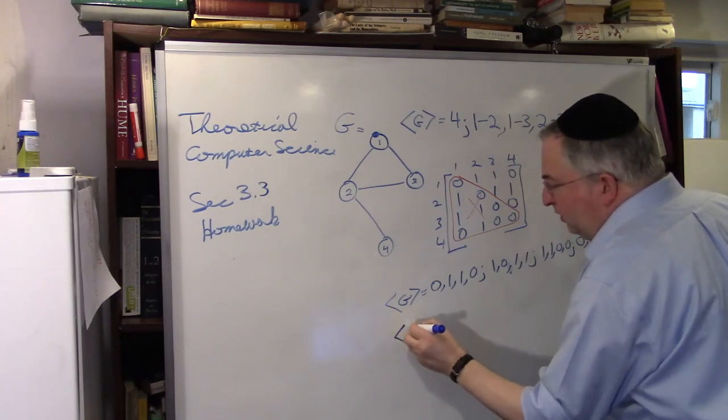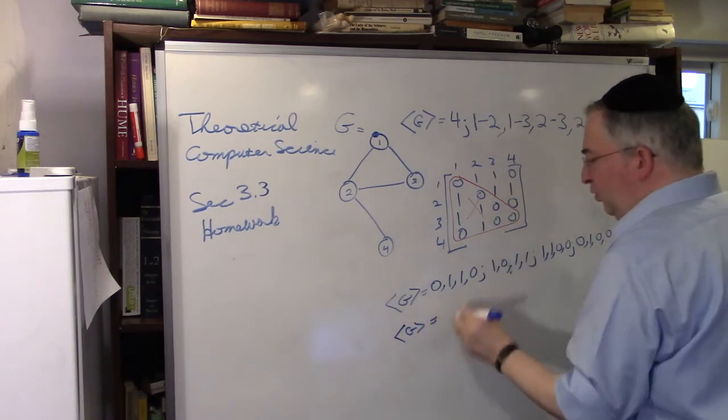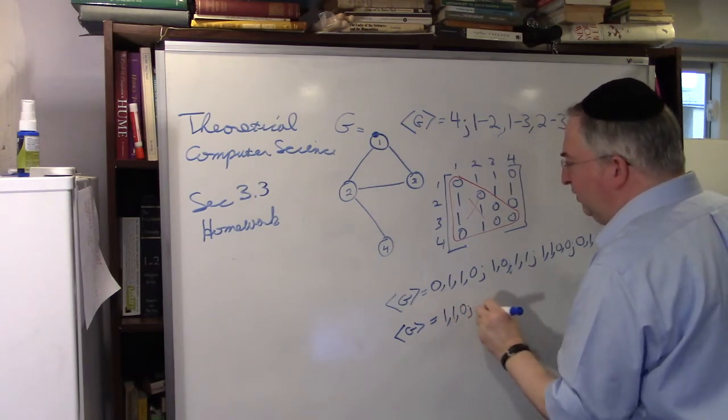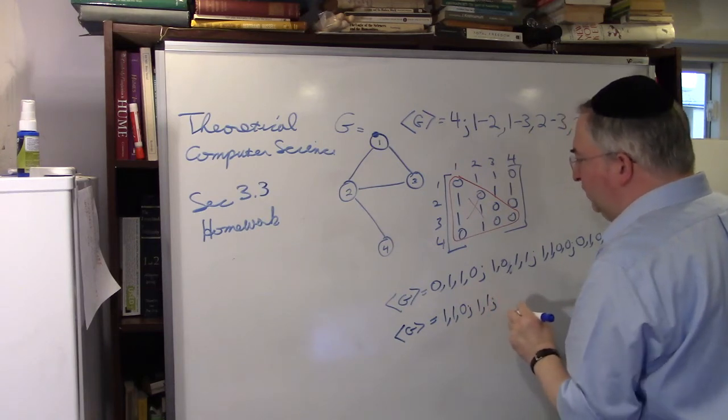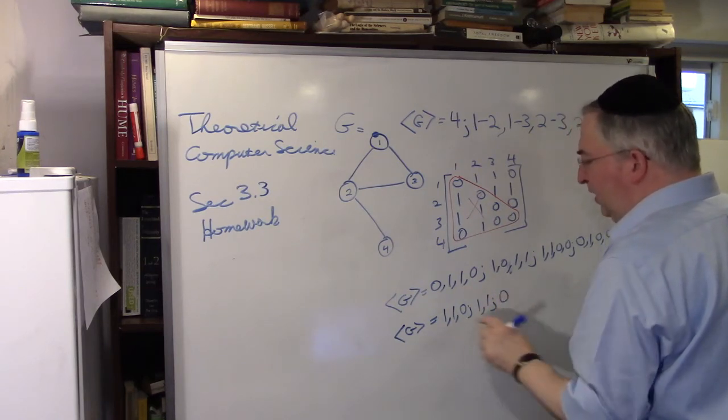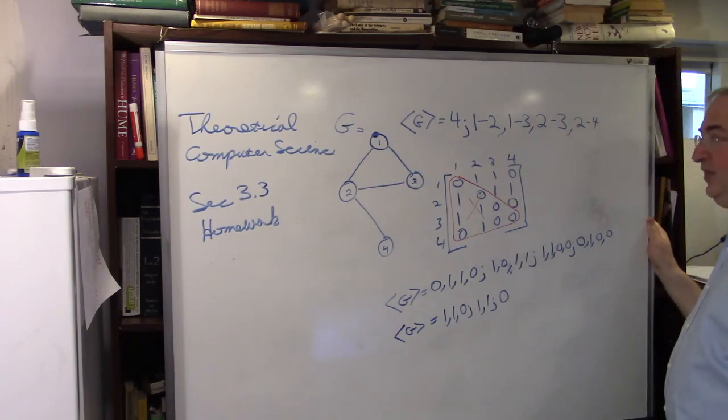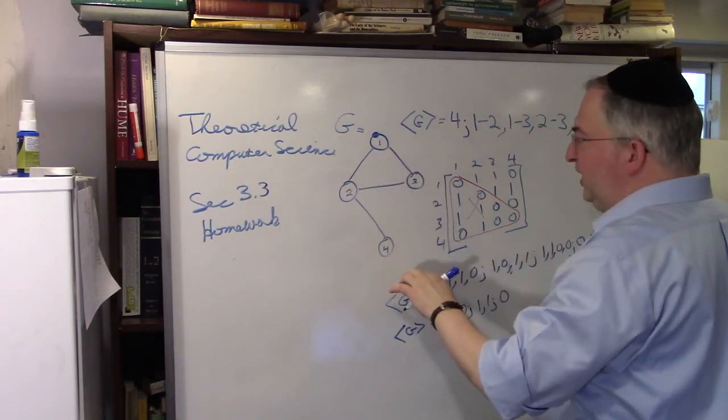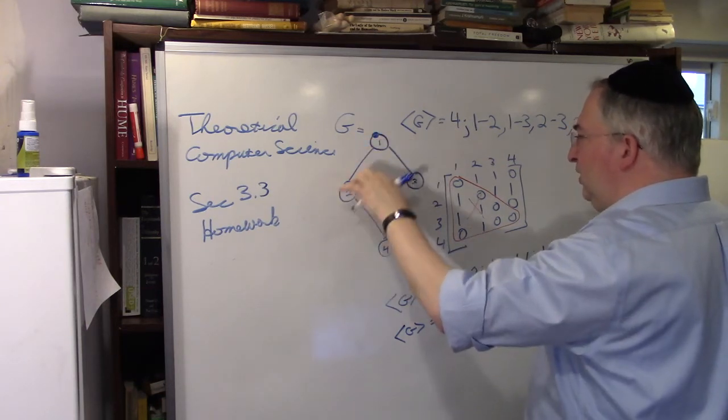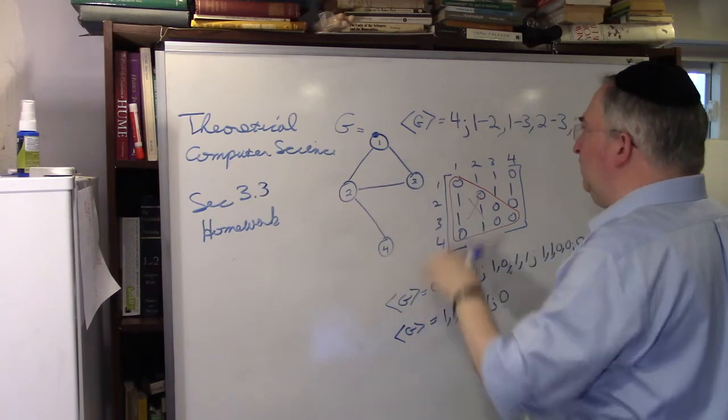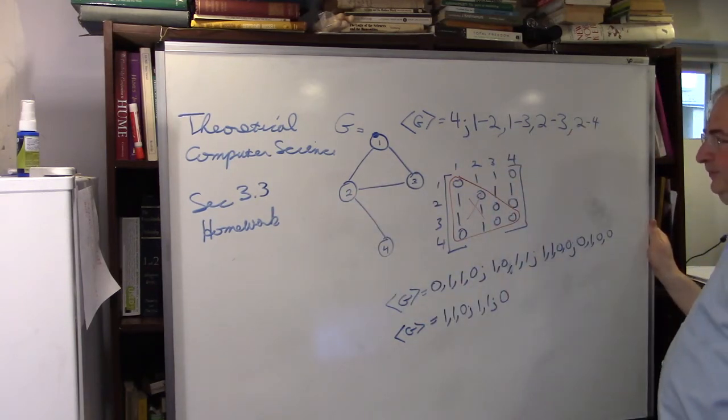Maybe I can store it like this: G equals one comma one comma zero semicolon, one comma one semicolon, zero. This is eleven characters. That's better than seventeen. Can you do better than this? Probably. You can basically say I have four vertices and then somehow describe the vertices.